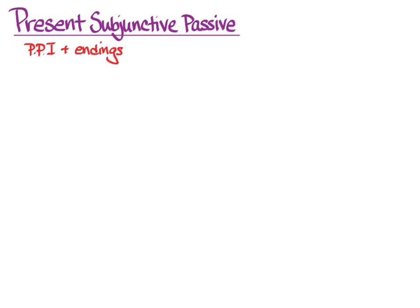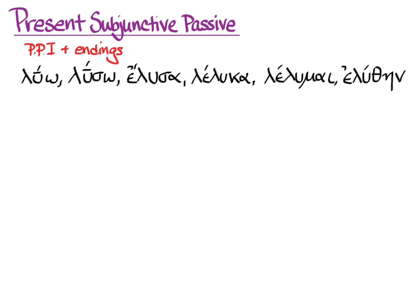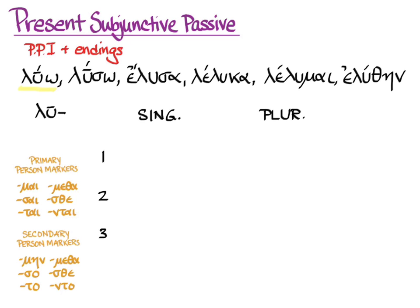To form the present subjunctive passive, you go to the first principal part — where you go for all things present — and you'll need endings. Let's look at our favorite verb: luo, luso, elusa, leluca, lelumai, eluthane. We go to the first principal part, make a stem by taking off the omega, and now we're doing the passive, so here are our passive person markers.